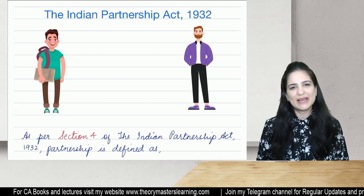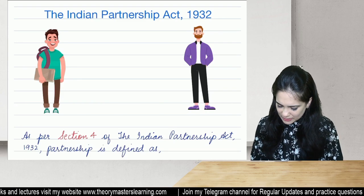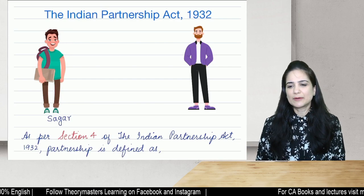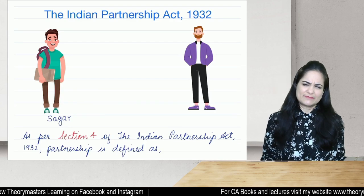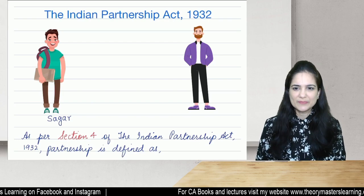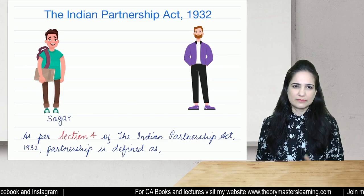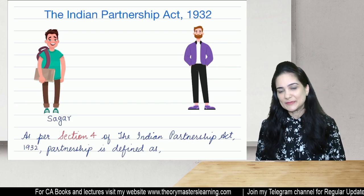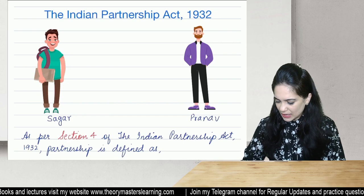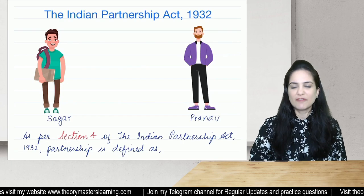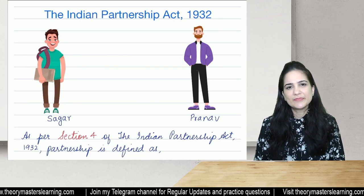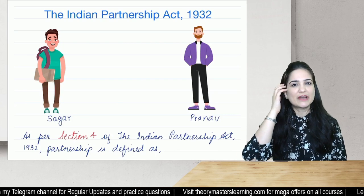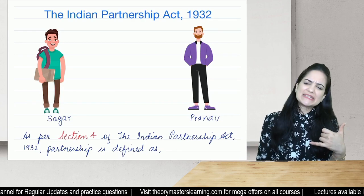Let us discuss the Indian Partnership Act 1932 with the help of an example. Mr. Sagar has just cleared the relevant examinations and he wants to start some business in computers. He doesn't want to do the business alone because he knows he will not be able to manage everything on his own. So he thinks of his senior Pranav — they were very good friends — and approaches him for a cup of coffee.